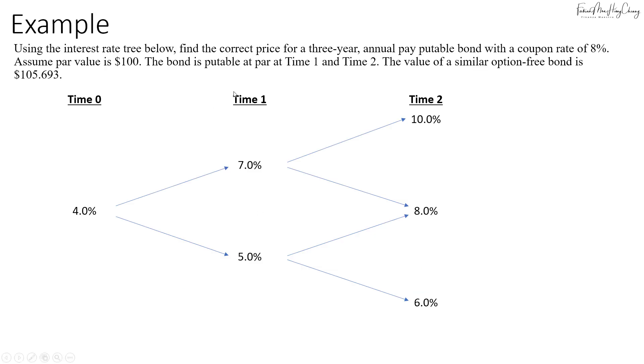For this example, we have the interest rate tree below. We are asked to value a three-year annual pay putable bond with a coupon rate of 8%, par value of $100, and the bond is putable at par at Time 1 and Time 2. The value of a similar option-free bond is $105.693.